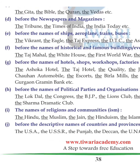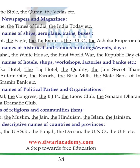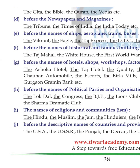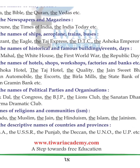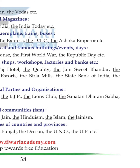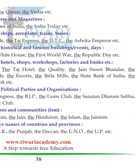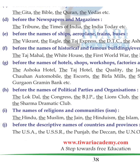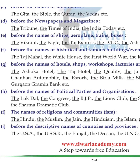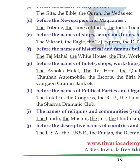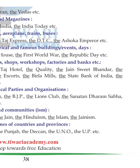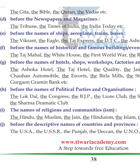'The' is used before names of hotels, shops, factories, and banks: the Ashoka Hotel, the Taj Hotel, the State Bank of India, the Gurgaon Gramin Bank. Also before names of political parties and organizations: the Lok Dal, the Congress, the BJP, the Lions Club, the Sanatan Dharma Sabha, the Sharma Dramatic Club.